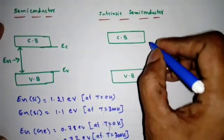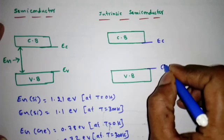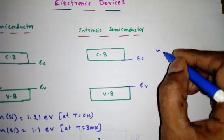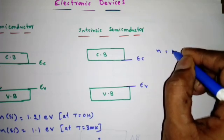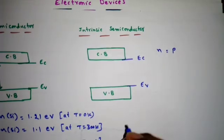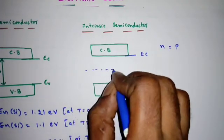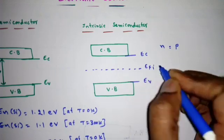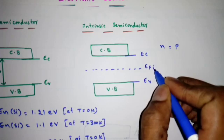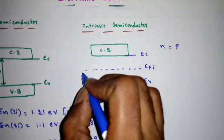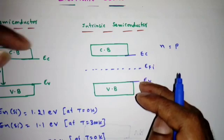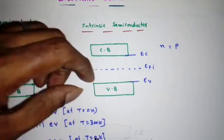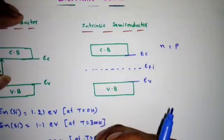For an intrinsic semiconductor with energy levels Ec and Ev, the number of free electrons in the conduction band equals the number of holes in the valence band. To represent this, the Fermi level Efi is placed in the middle of the energy gap. Whenever the Fermi level is at the midgap, electron and hole concentrations are equal.